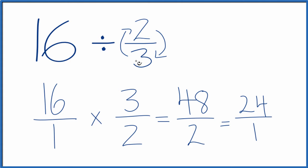So 16 divided by 2 thirds, we get 24. If you multiply 24 times 2 thirds, you're going to get 16. So we did this correctly.